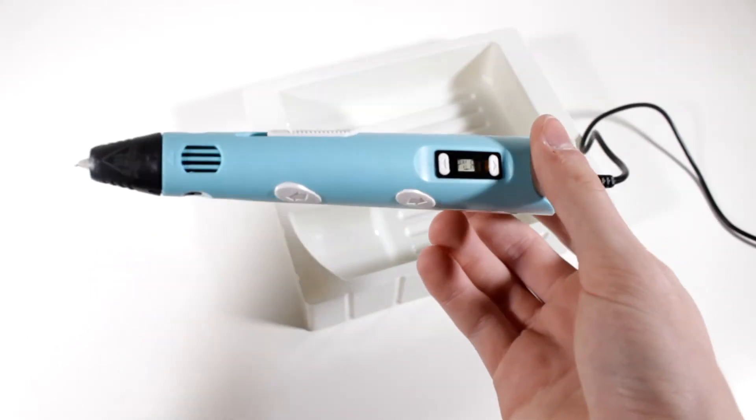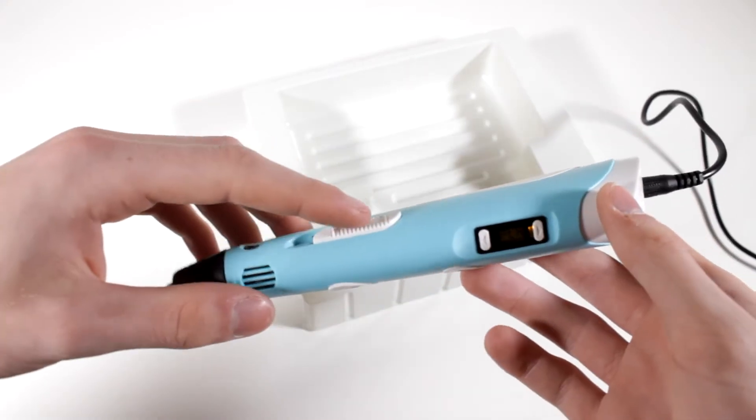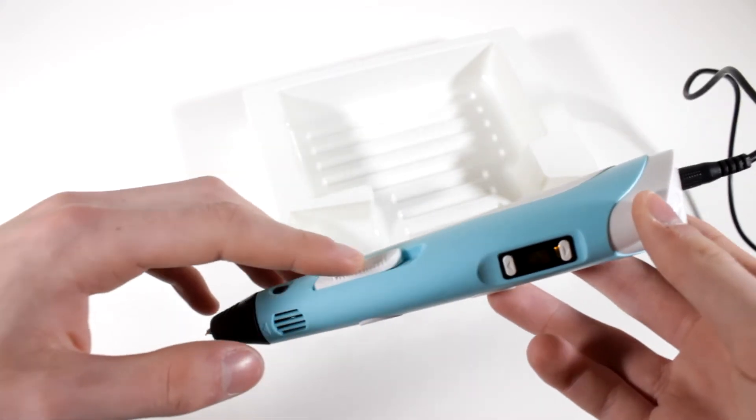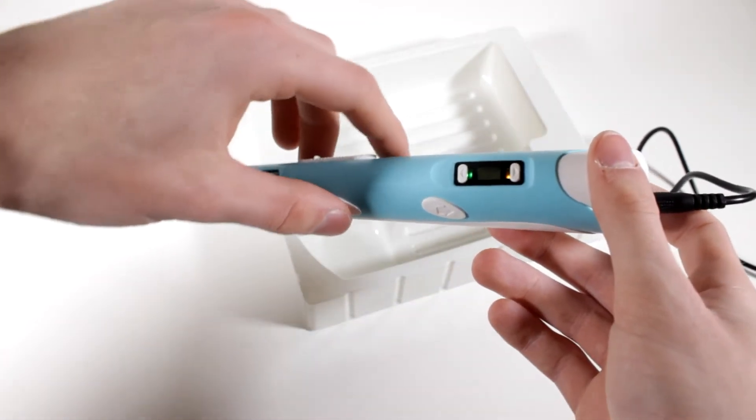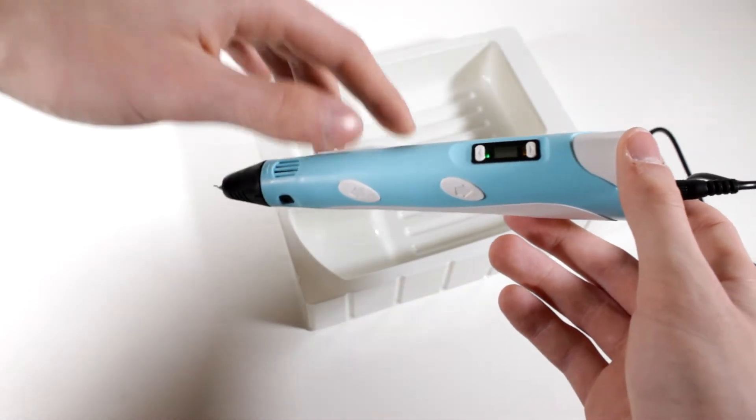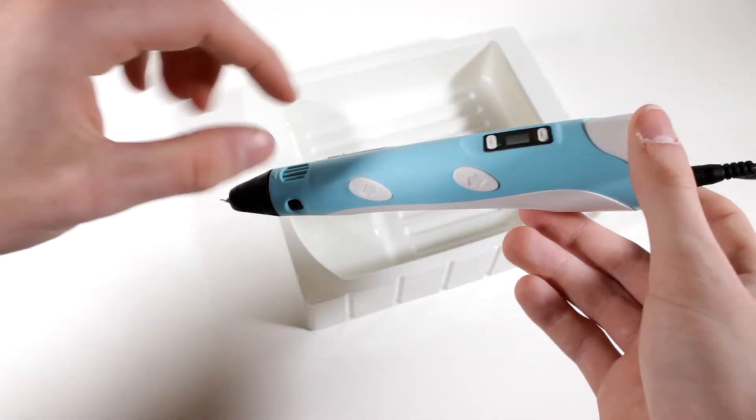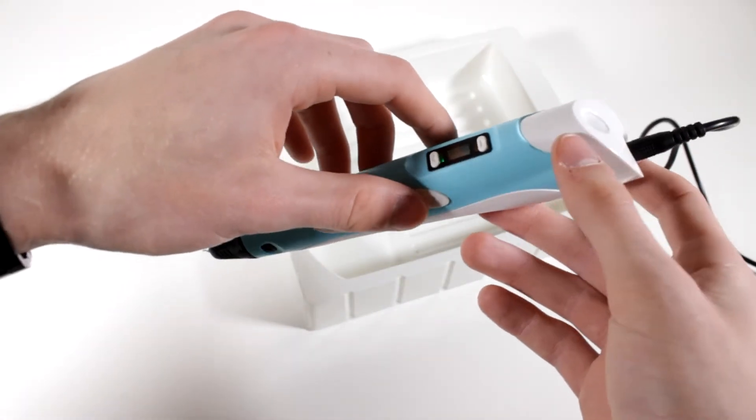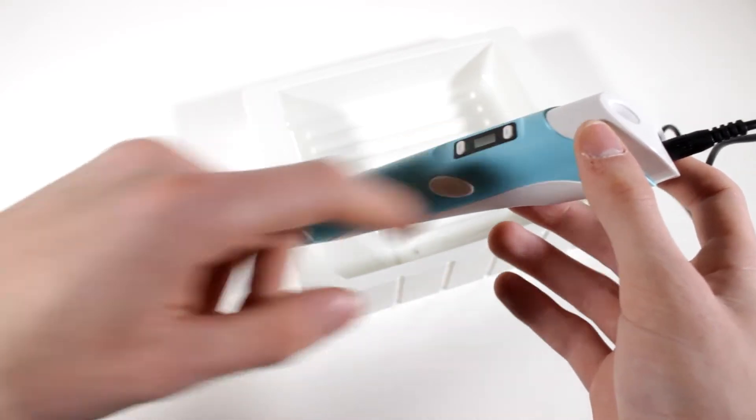Here you can adjust the speed at which the filament actually comes out by this little slider here. It does feel very good and smooth. Here we have the kind of down, so this puts the filament into the pen, so it goes down and draws it down, and this pushes it back up so it's like the reversal. This brings it down into the pen and this reverses it.